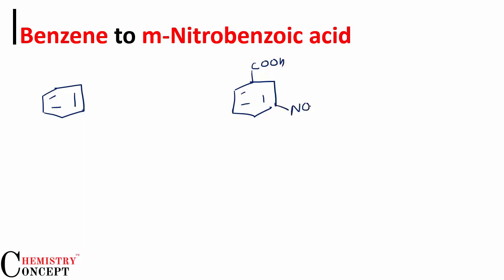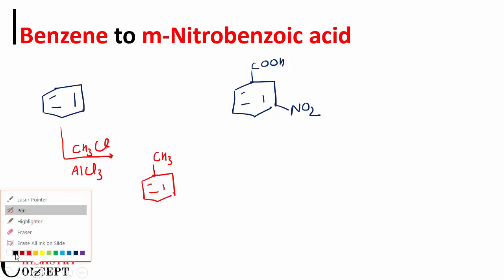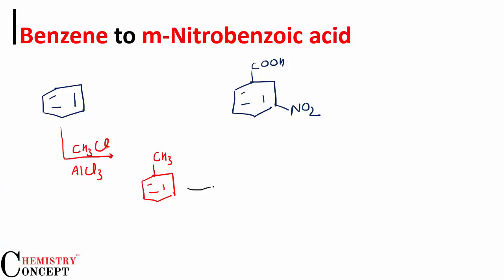First, react it with CH₃Cl in presence of anhydrous AlCl₃. We want to introduce a methyl group over the benzene. You can use an ethyl group, propyl group, or whatever alkyl group you want — just introduce it over the benzene using Friedel-Crafts alkylation.